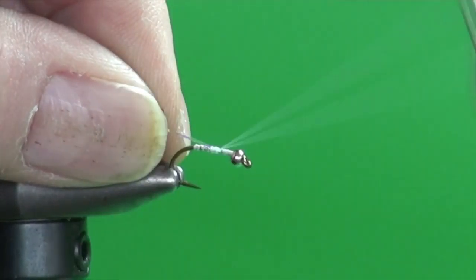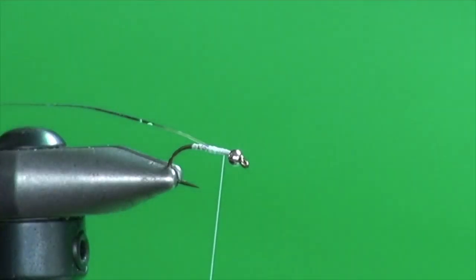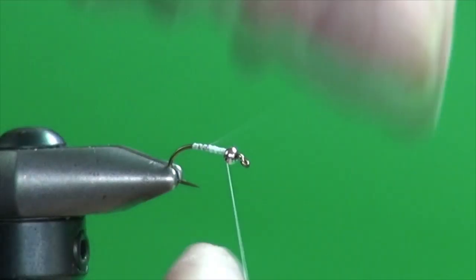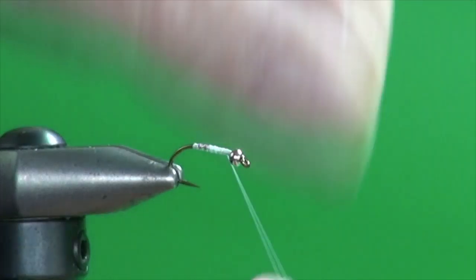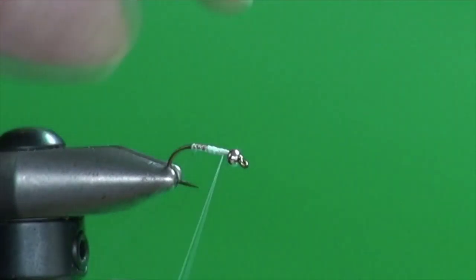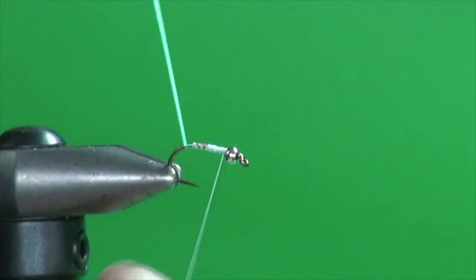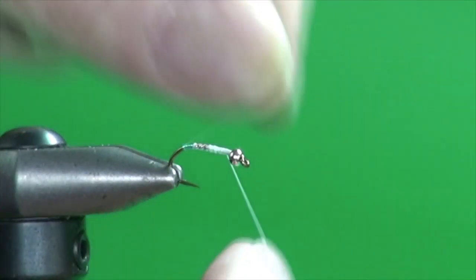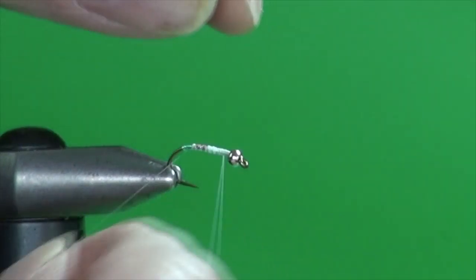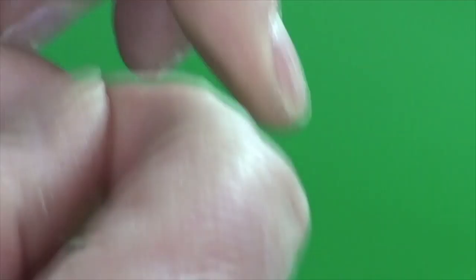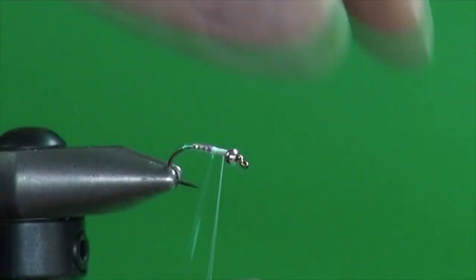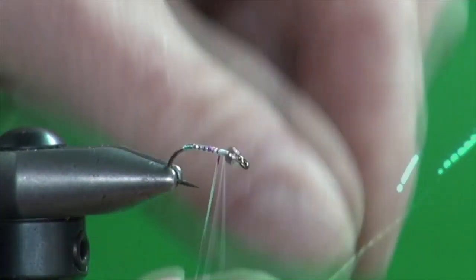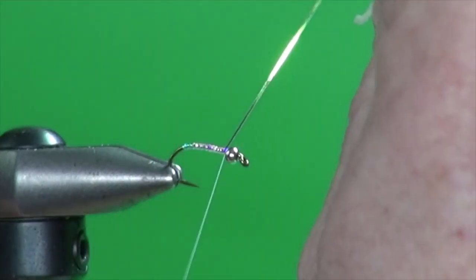Just get them started. Tying thread back up and we're going to wind the two strands together back down the shank into the bend a little bit. This is just a little bit of a flashy butt to catch some light and help suggest a little air bubble that these air breathing aquatic insects use to enable them to survive down in the water. Let's bring that up.